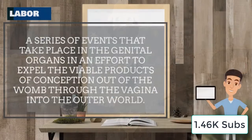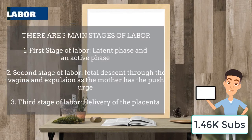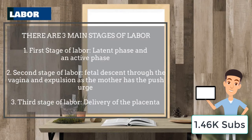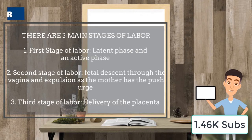Recall that labor is a series of events that takes place in the genital organs in an effort to expel the viable products of conception out of the womb through the vagina into the outer world. Labor is divided into three main stages: the first stage, which is divided into the latent and active phase; the second stage, where fetal descent is through the vagina and expulsion as the mother has the push urge; and the third is the delivery of the placenta.